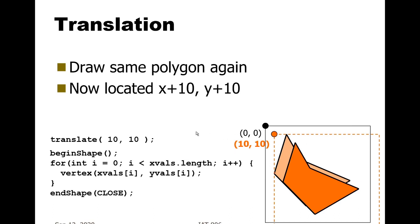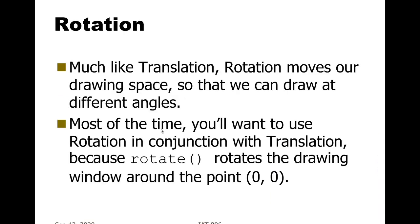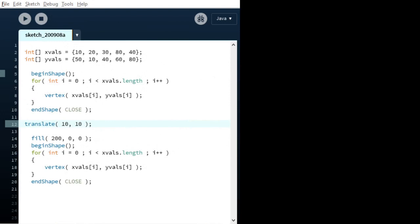That's what translation does—it moves the origin by the amount that you specify. So before we go to rotation, let's see that in action. We have this piece of code from before where we specify the geometry, do the begin shape, for loop, vertex, end shape thing. Now we're going to follow that with a translate call and do exactly the same stuff again.